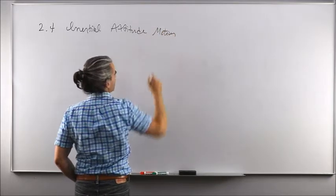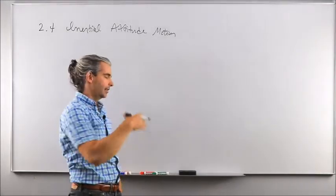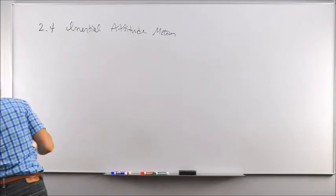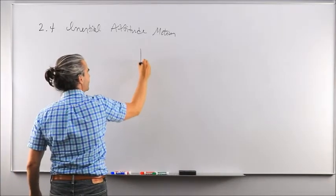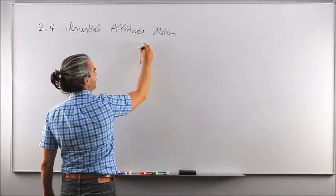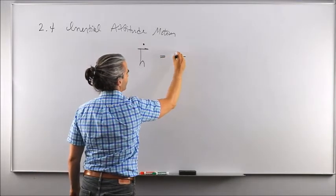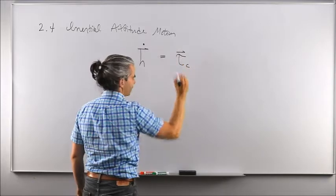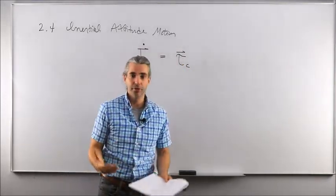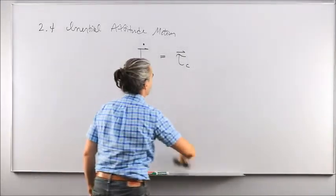We want to analyze the motion of the body-fixed reference frame physically attached to the rigid body, seen from an inertial perspective. The first thing to realize is that our h vector — the angular momentum vector — if we take the inertial time derivative, that gives the net torque applied about the center of mass. But here the underlying assumption of this chapter is a torque-free environment: no torque is being applied to the spacecraft.